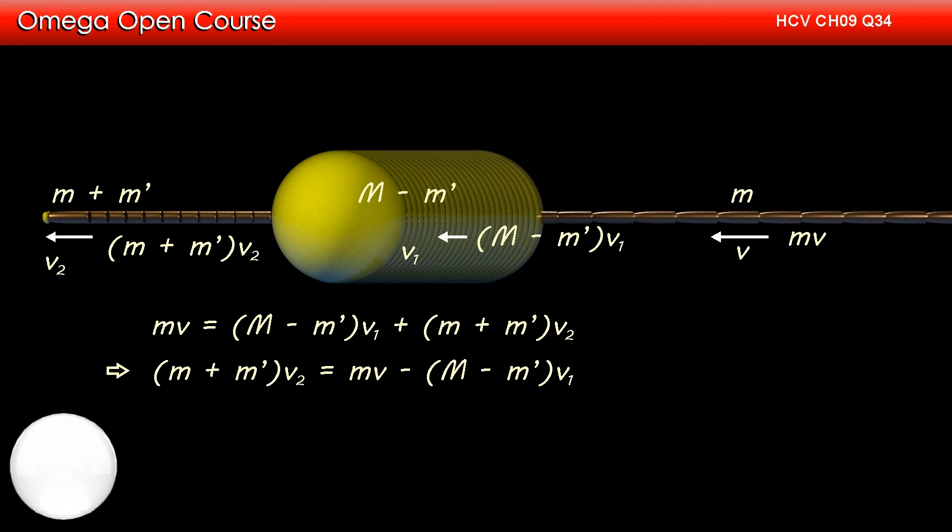This implies M plus M' into V2 is equal to MV minus capital M minus M' into V1, or V2 is equal to MV minus capital M minus M' into V1 divided by M plus M'. This is our answer.